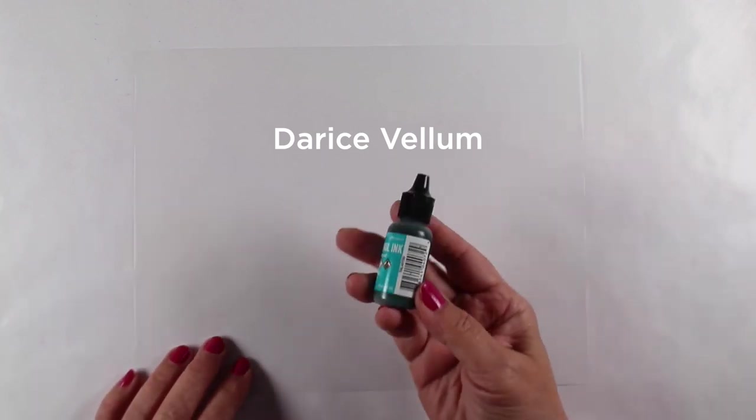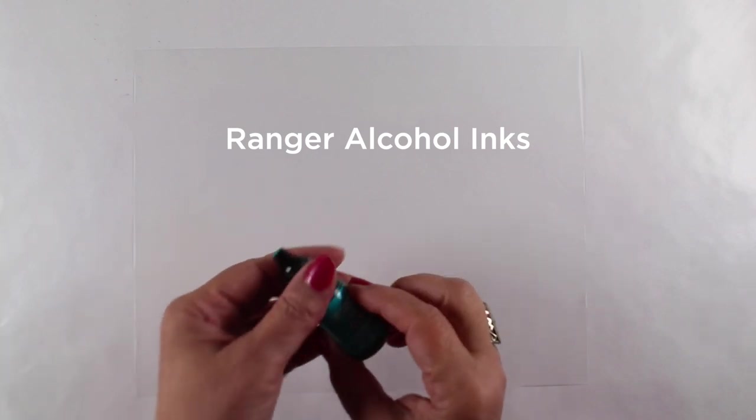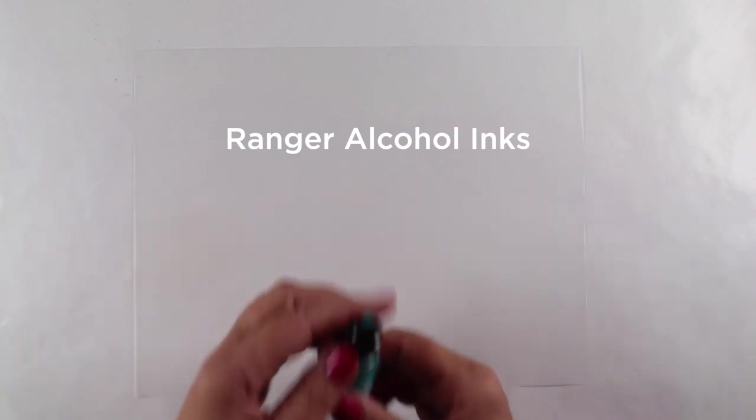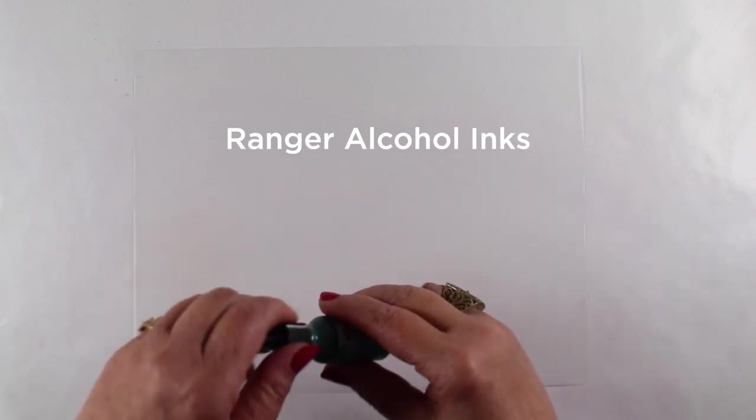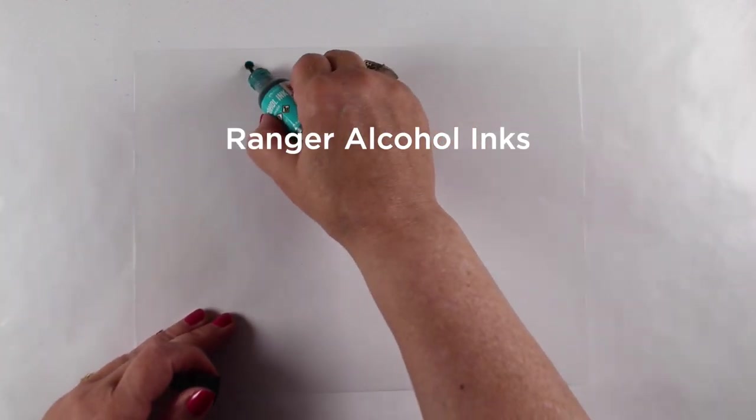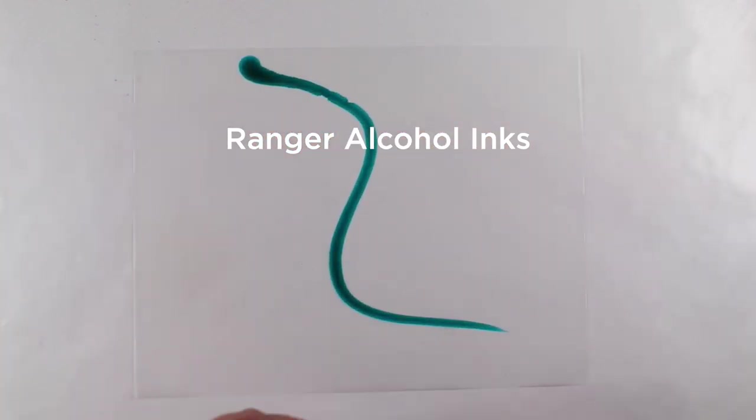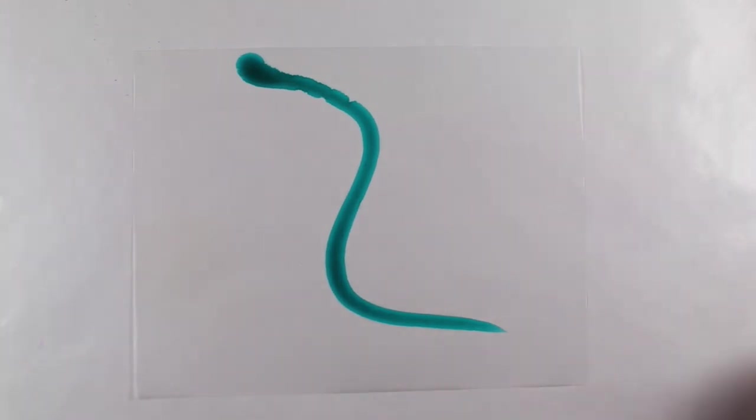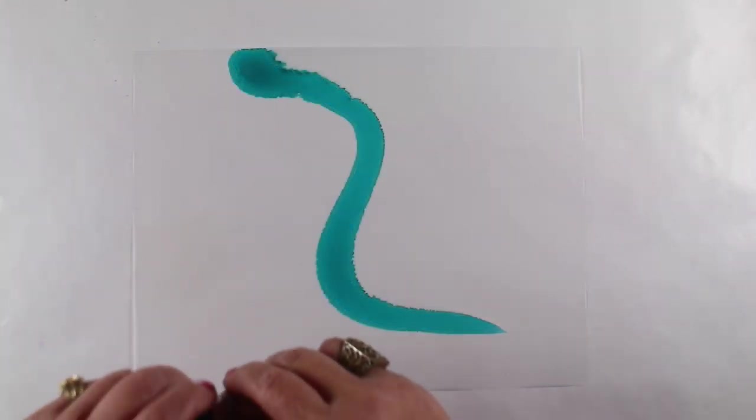I'm using some of the vellum that I have talked about before. I used this instead of tracing paper. It's a little bit heavier. And with alcohol inks, you can just squeeze them out onto this vellum and do some kind of cool things with them.